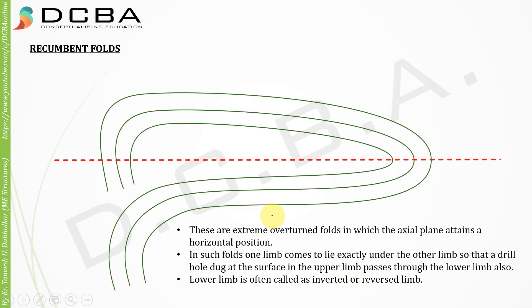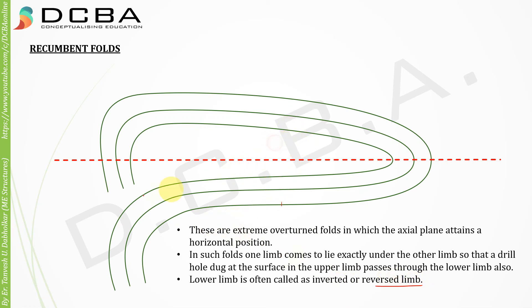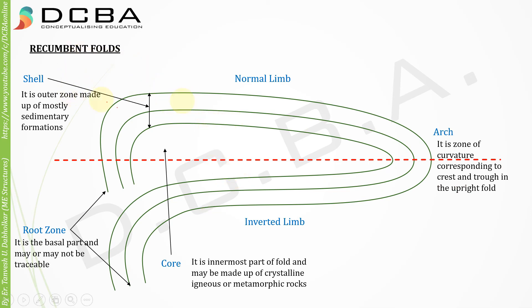Recumbent folds are extremely overturned folds in which the axial plane attains a horizontal position. In such a fold, one limb comes to lie exactly under the other limb, so that a hole dug at the surface in the upper limb passes through the lower limb as well. The lower limb is often called the inverted or reversed limb. As we saw with overturned folds, one limb gets rotated by an angle of 90 degrees or more.